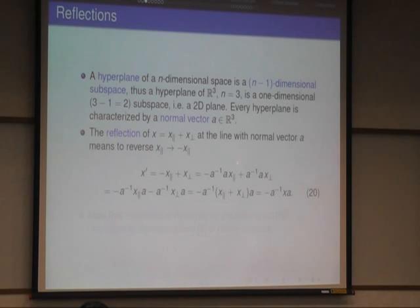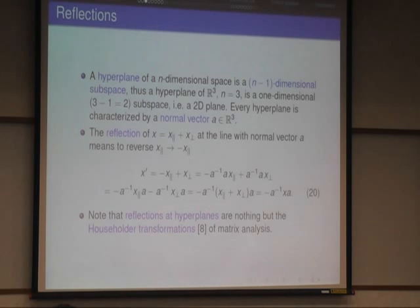And so I write it here, and if you go through the computation, you'll find that the reflected vector, which is on the other side of the mirror plane, simply has the form of the sandwich here. We take minus A inverse times X times A. And reflections at hyperplanes are nothing but what is known as Householder transformations in matrix analysis, so you have a good expression for that now in the algebra.